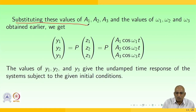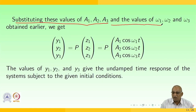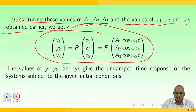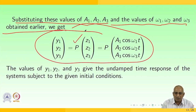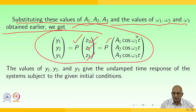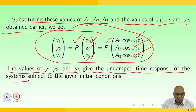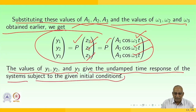Substituting the values of a1, a2, a3 and ω1, ω2, ω3 obtained earlier, the solution is [y1, y2, y3]^T = P·[z1, z2, z3]^T = P·[a1·cos(ω1·t), a2·cos(ω2·t), a3·cos(ω3·t)]^T. The values of y1, y2, y3 give the undamped time response of the system subjected to the initial conditions.